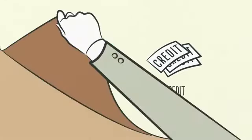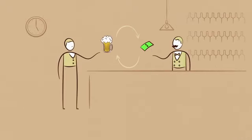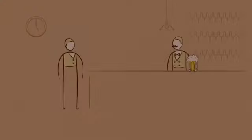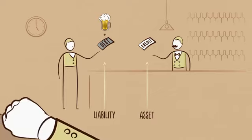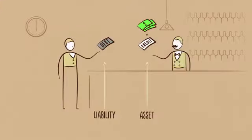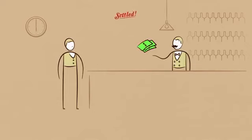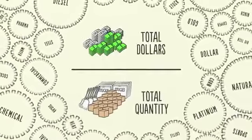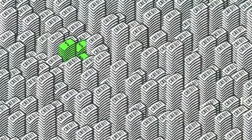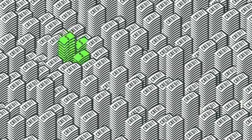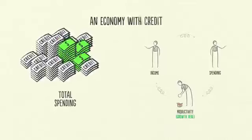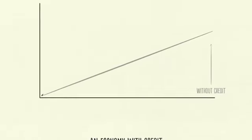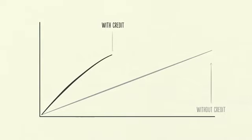When you buy a beer from a bartender with cash, the transaction is settled immediately. But when you buy a beer with credit, it's like starting a bar tab — you're saying you promise to pay in the future. Together, you and the bartender create an asset and a liability. You just created credit out of thin air. It's not until you pay the bar tab later that the asset and the liability disappear, the debt goes away, and the transaction is settled. The reality is that most of what people call money is actually credit. The total amount of credit in the United States is about $50 trillion, and the total amount of money is only about $3 trillion. In an economy with credit, you can increase your spending by borrowing. As a result, an economy with credit has more spending and allows incomes to rise faster than productivity over the short run, but not over the long run.